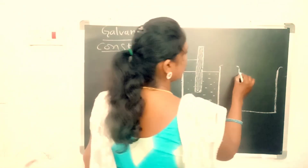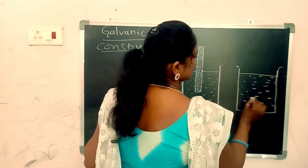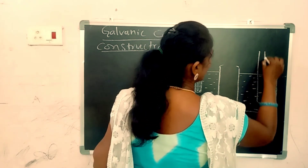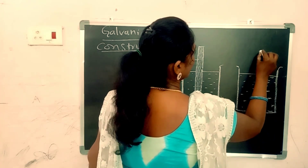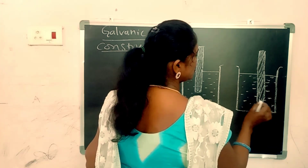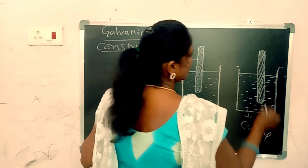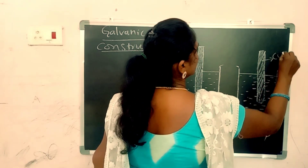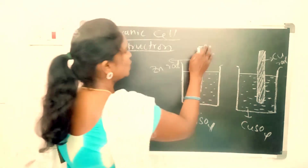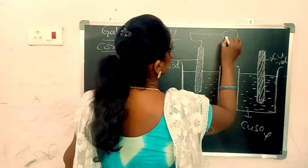The second half cell contains copper sulfate solution, in which we dip a copper rod. So here a copper rod is dipped in copper sulfate solution. The two half cells are connected through a voltmeter.